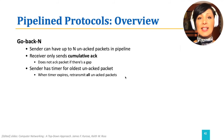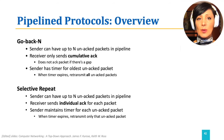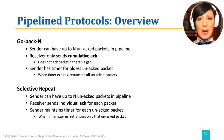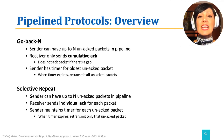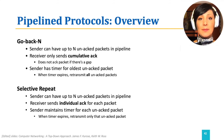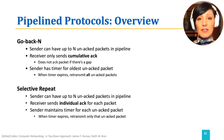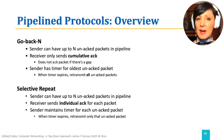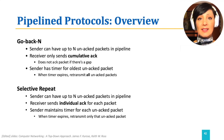In Selective Repeat, the sender can also have up to N unACKed packets in the pipeline. However, the receiver sends individual ACKs for each packet, and the sender maintains a timer for each packet individually. When the timer expires, it retransmits only that unACKed packet.